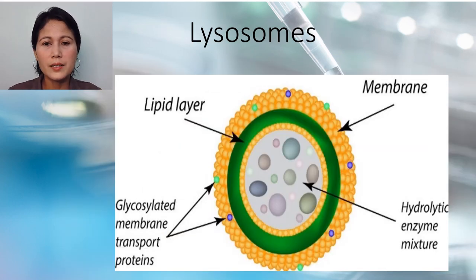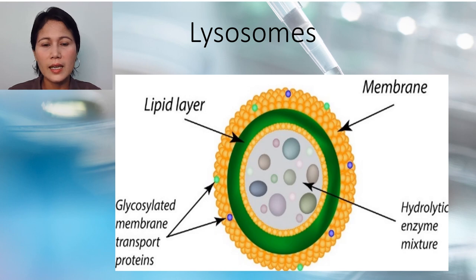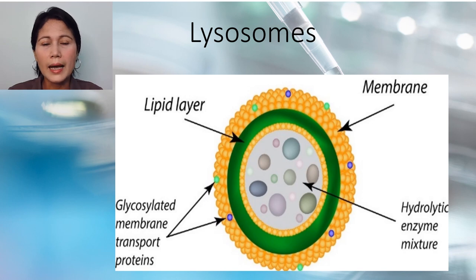Now let us go to lysosomes. Lysosomes are tiny sacs which function in, first, heterophagy — the taking into the cell of exogenous material by phagocytosis or pinocytosis and the digestion of the ingested materials from fusion of the newly formed vacuole with a lysosome.